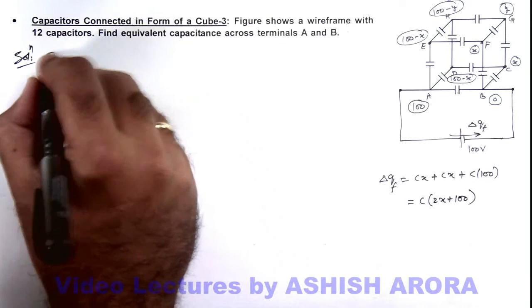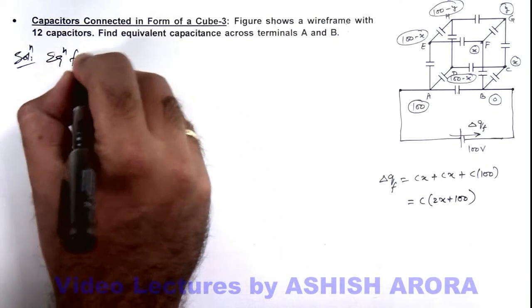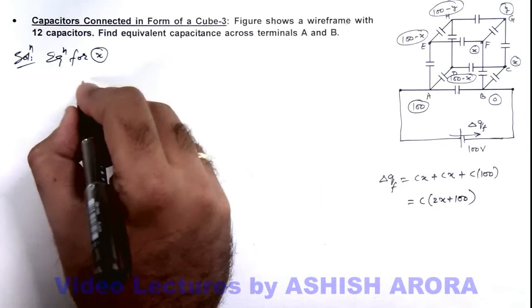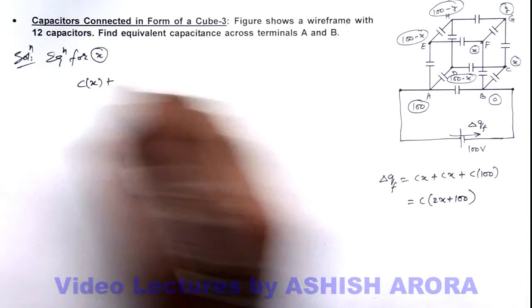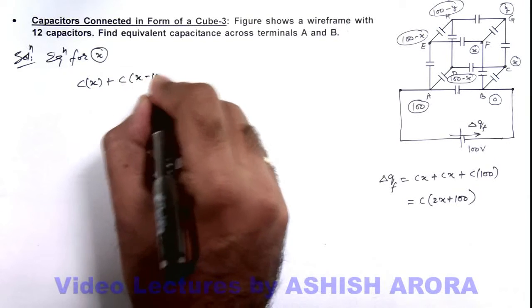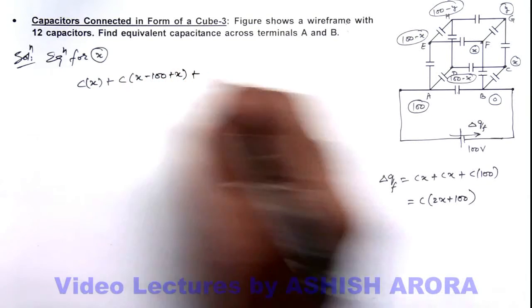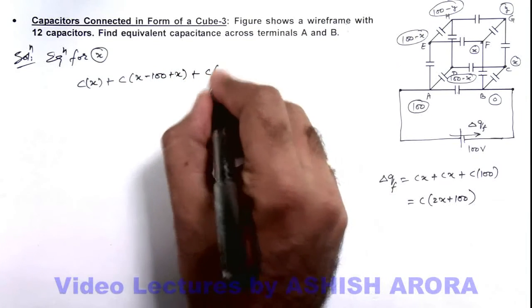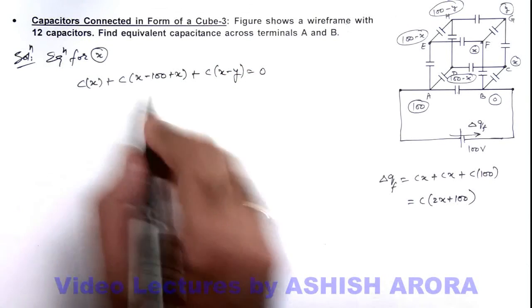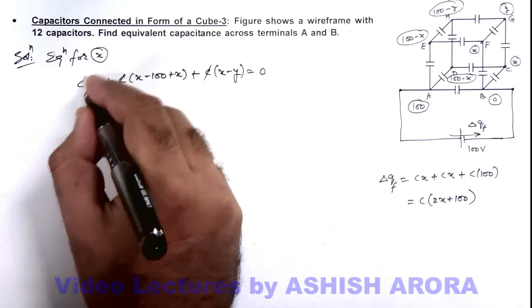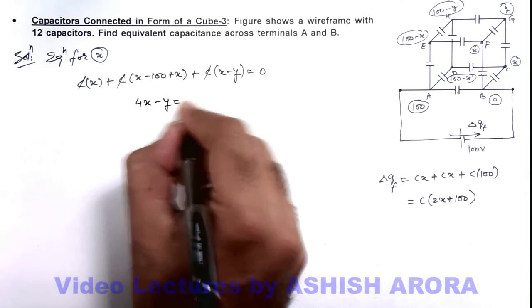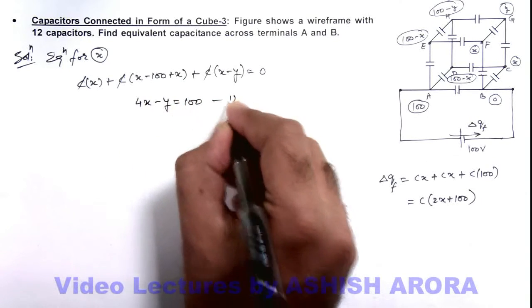So here first we write equation for x. For node x we can write the equation as Cx plus for this it is C multiplied by x minus 100 plus x, plus for this capacitor it is C multiplied by x minus y is equal to zero. On simplifying here C gets cancelled out and we are getting 4x minus y is equal to 100, say these are equation 1.